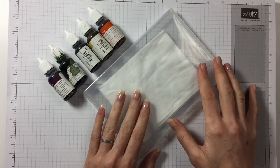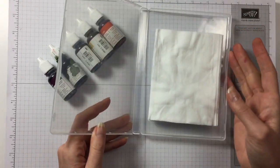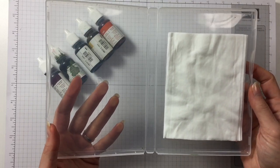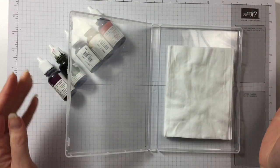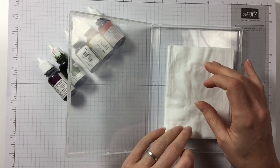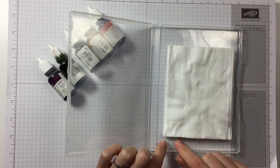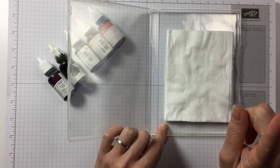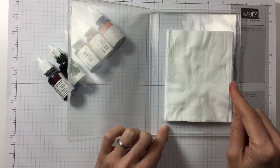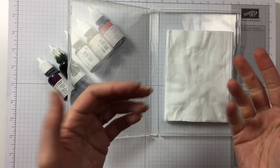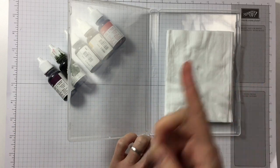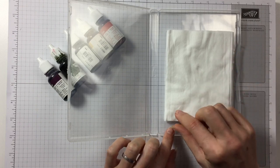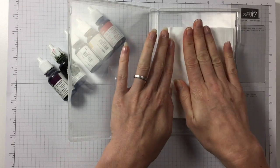What I do is I have this empty case from Stampin' Up and I put some wet wipes in. In a previous video I used this same setup with just one wet wipe and I don't think that's enough because it kept coming up with the stamp. I used it with several wet wipes and that worked perfectly well, so I'm doing it again with several wet wipes.